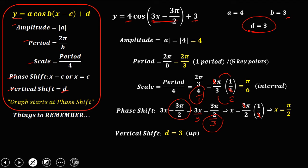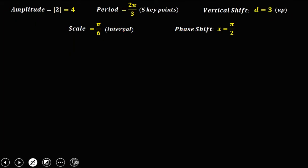Using these values — amplitude, period, vertical shift, scale, and phase shift — we can now graph this equation. For the graph, always start plotting at the phase shift, which is π/2.